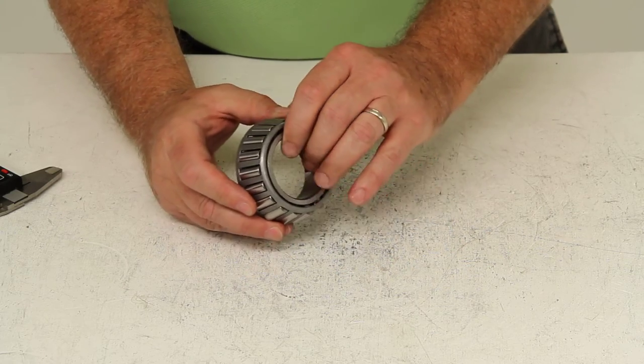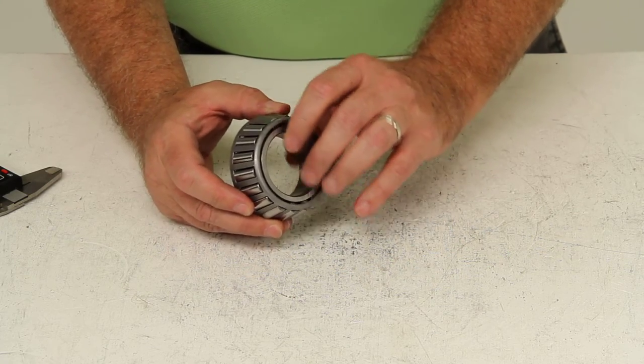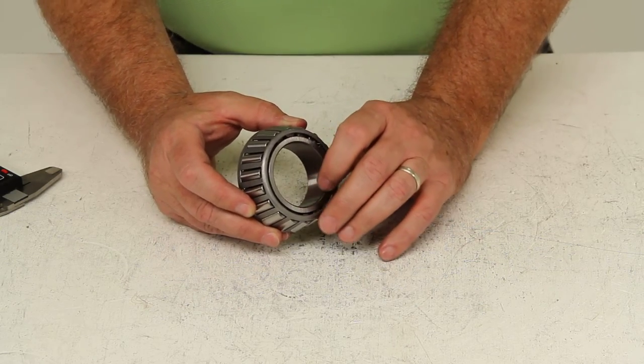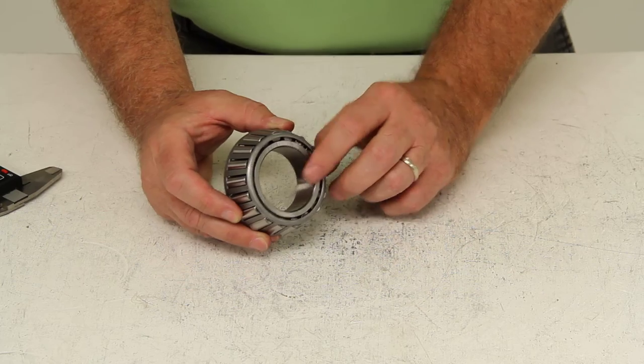And on the bearing race the important measurement is the outer diameter which on that bearing race would be 3.265 to fit this bearing.